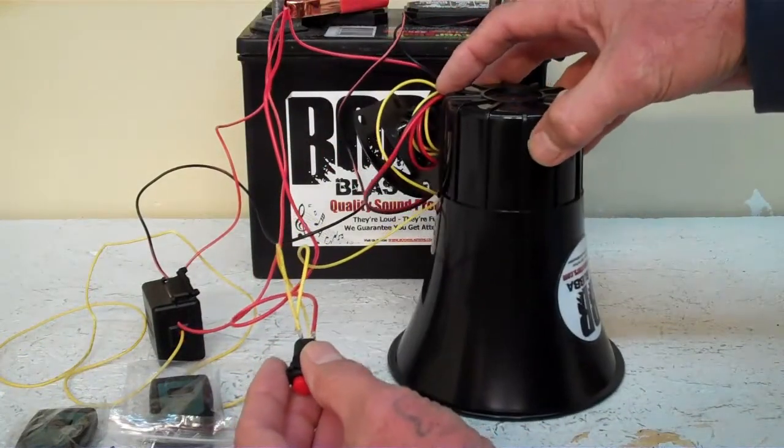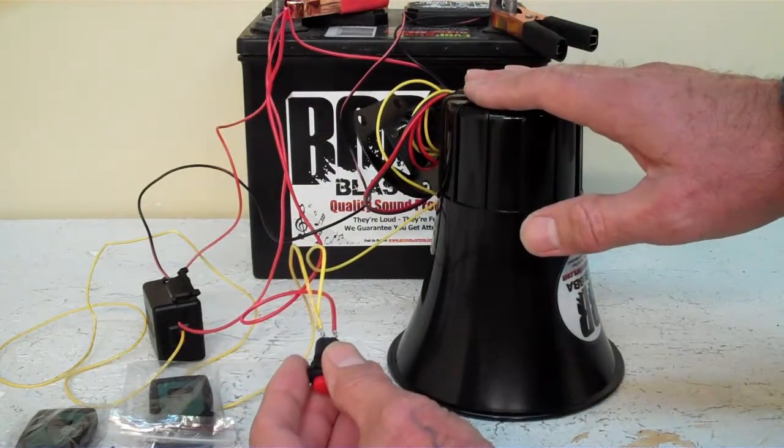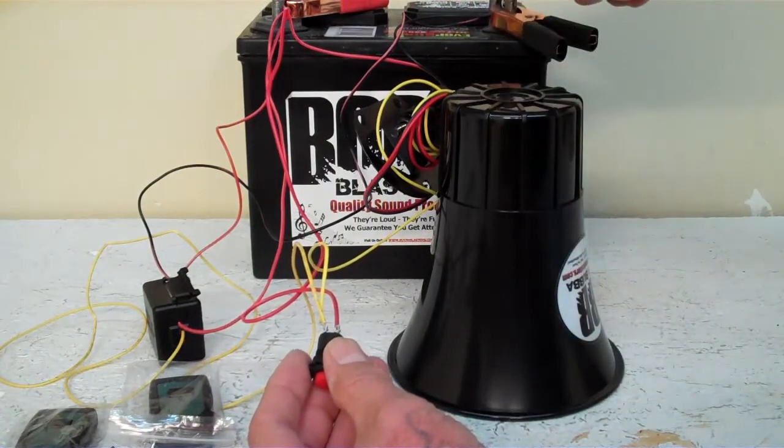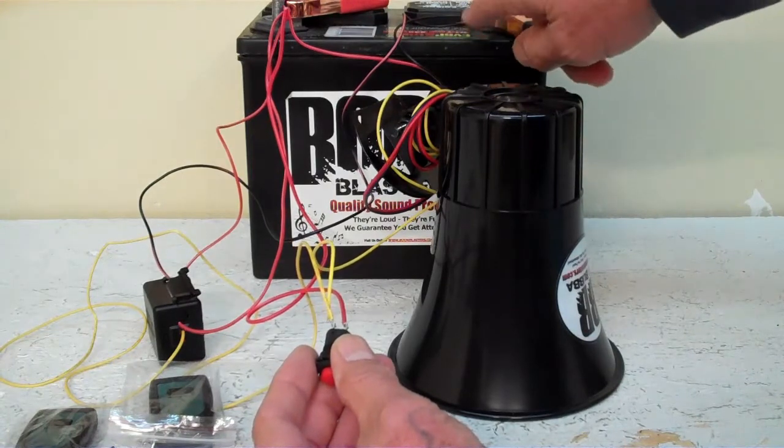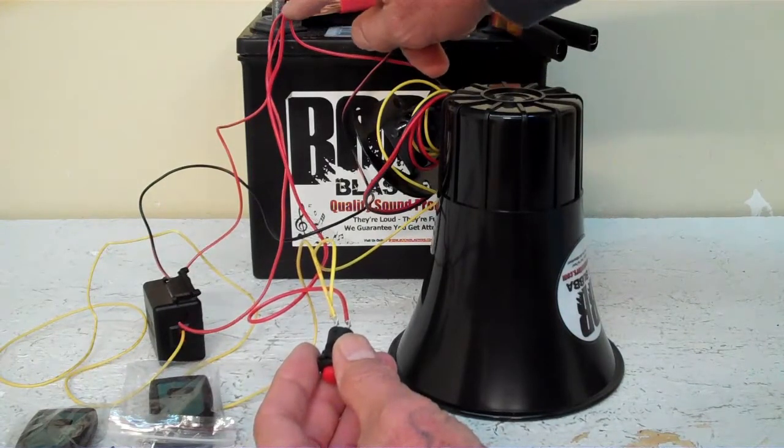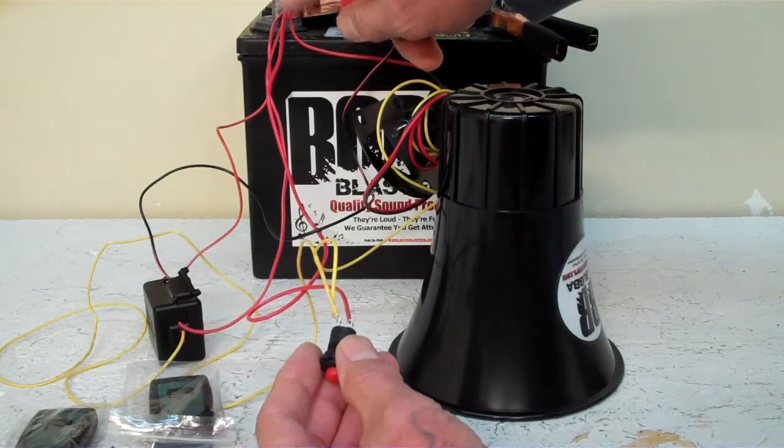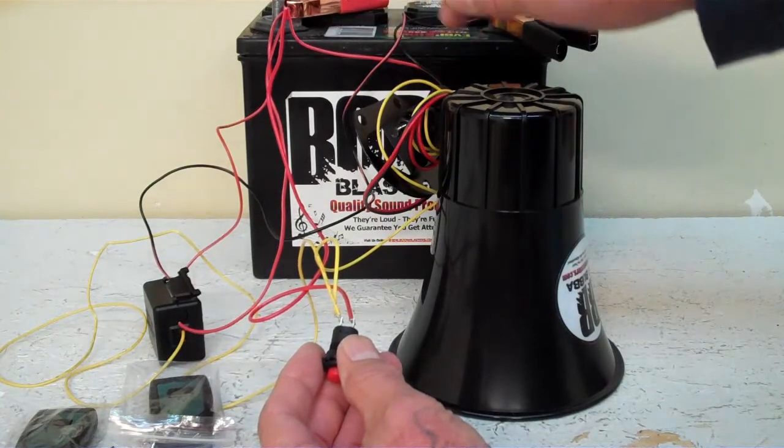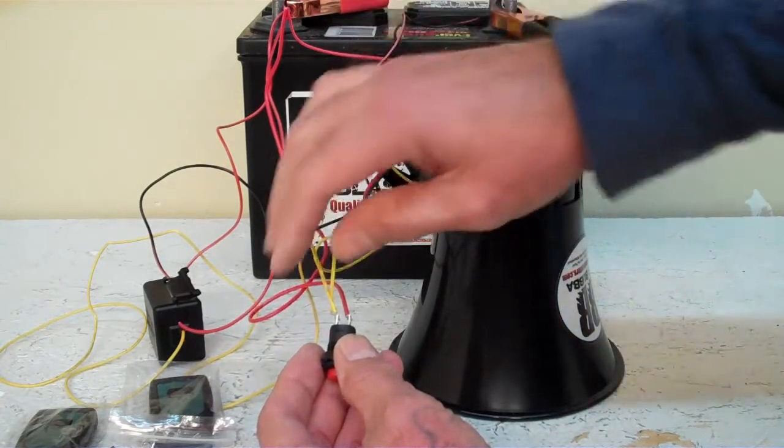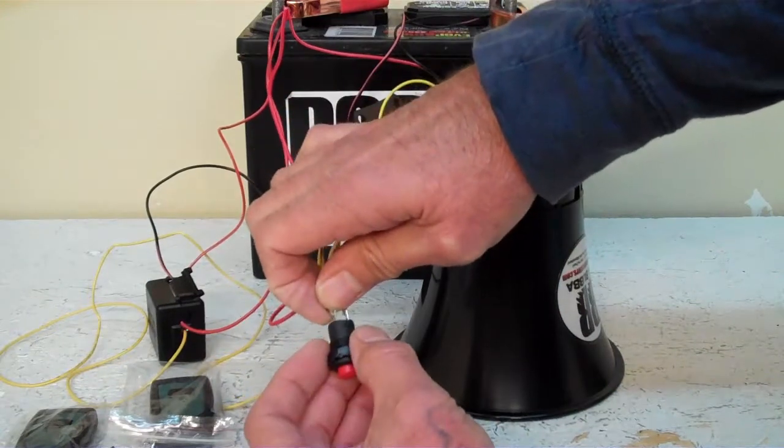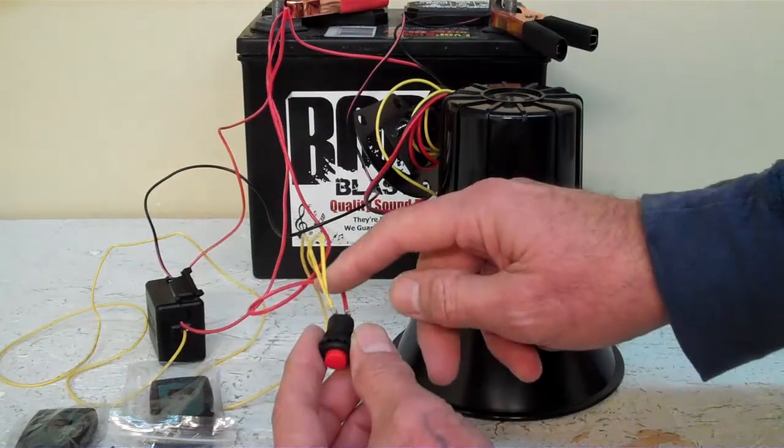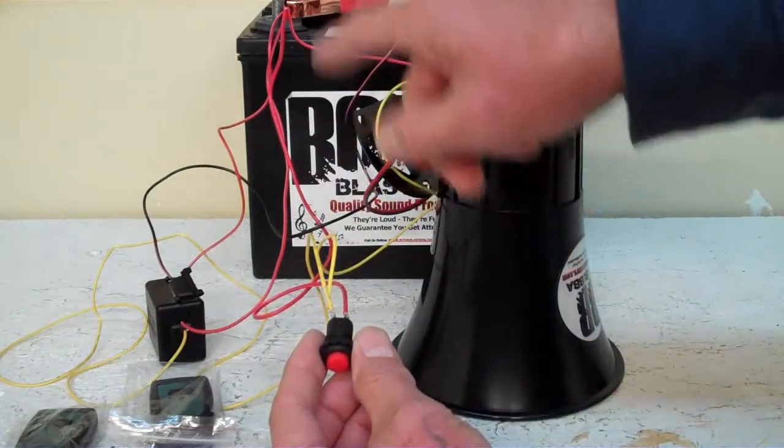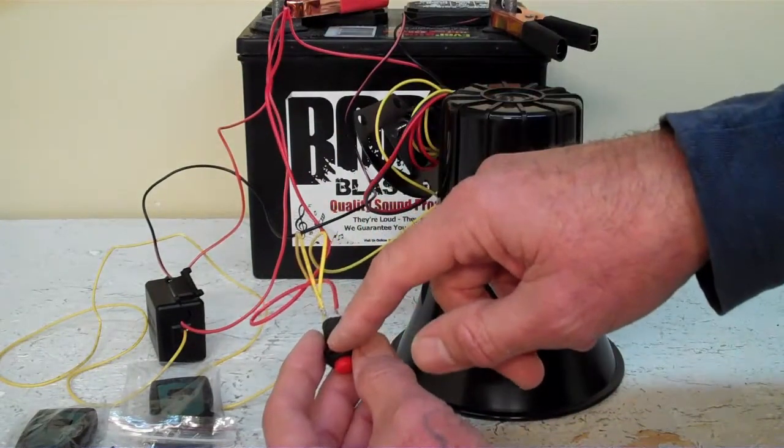So basically Big Bubba has a red wire and a black wire. Black wire goes to ground, over here on the battery. The red wire will go to a positive terminal somewhere, could be a battery or wherever you got a fuse. And then you have a yellow wire, and the yellow wire will always go to one side of the button. One side of the button it comes with, and then you simply run a hot wire from the battery or wherever you're getting your power to the other side of your button.